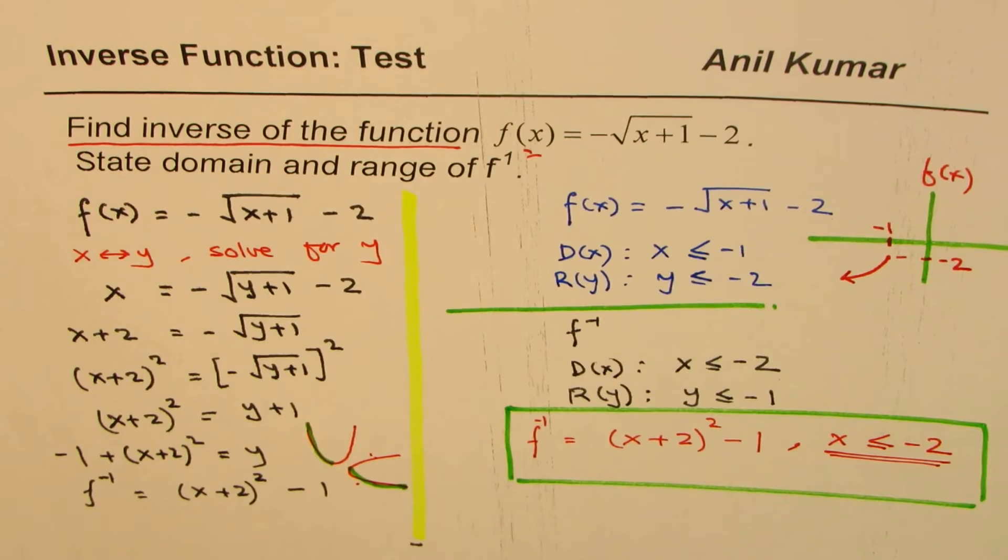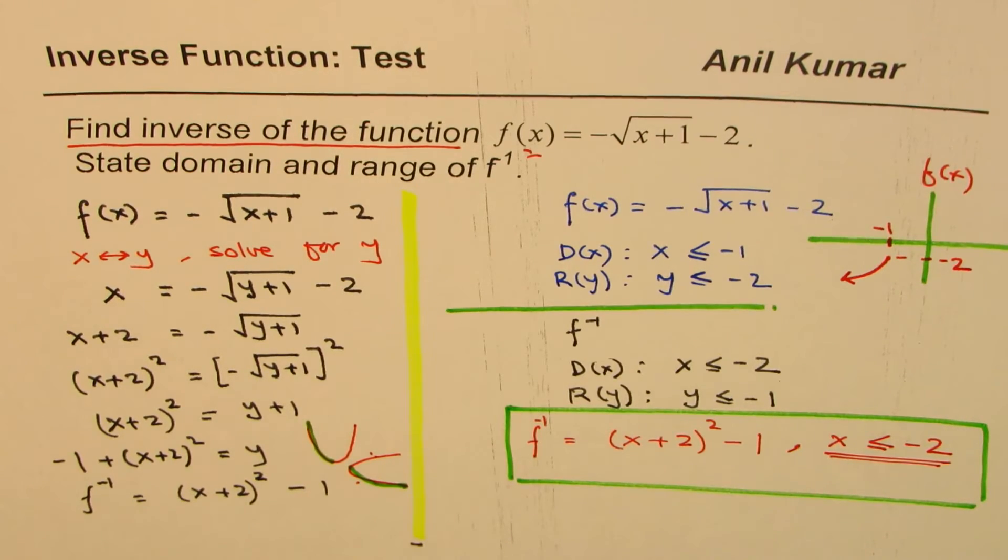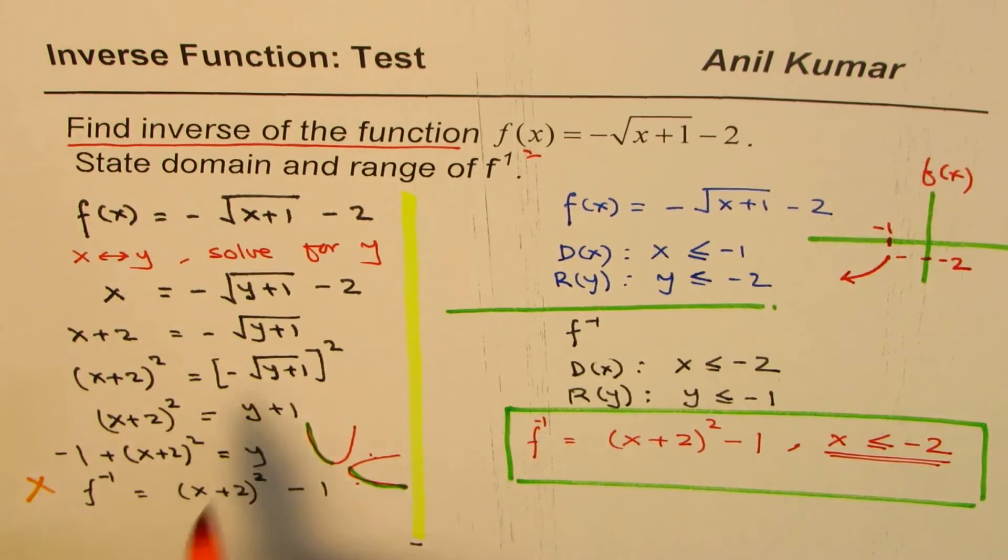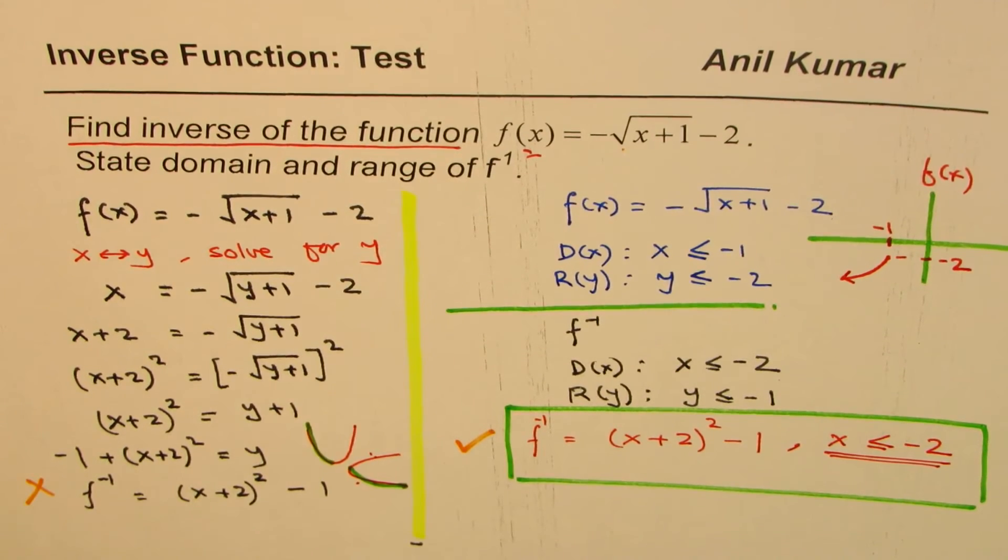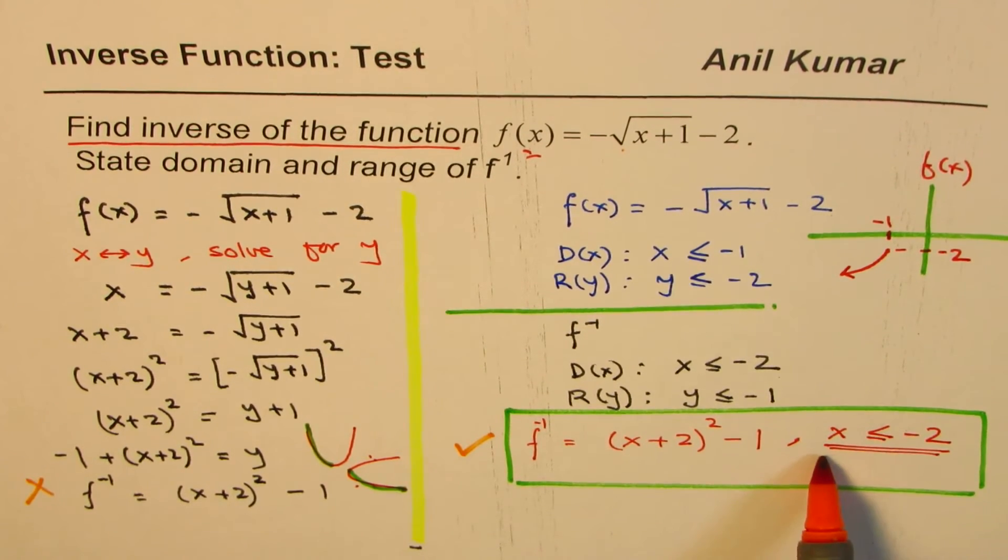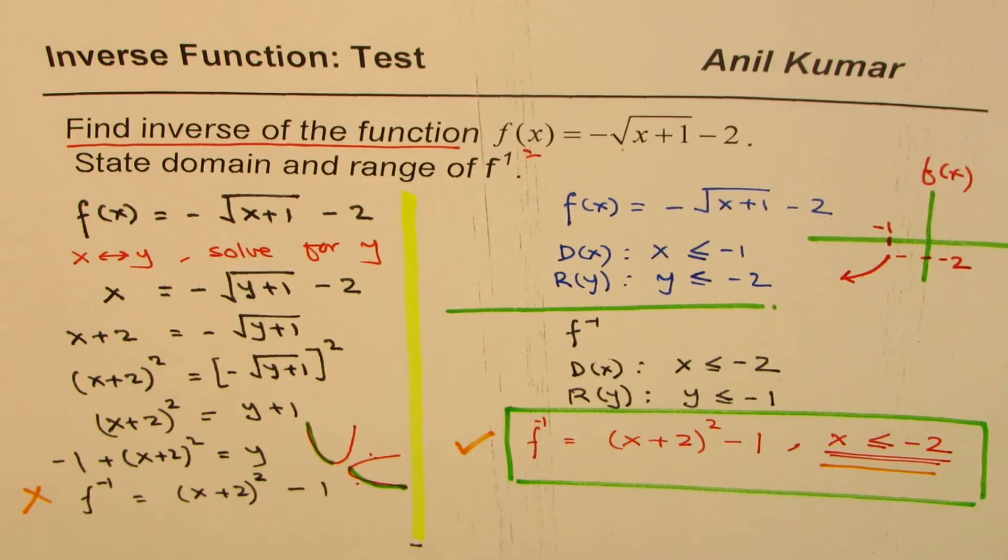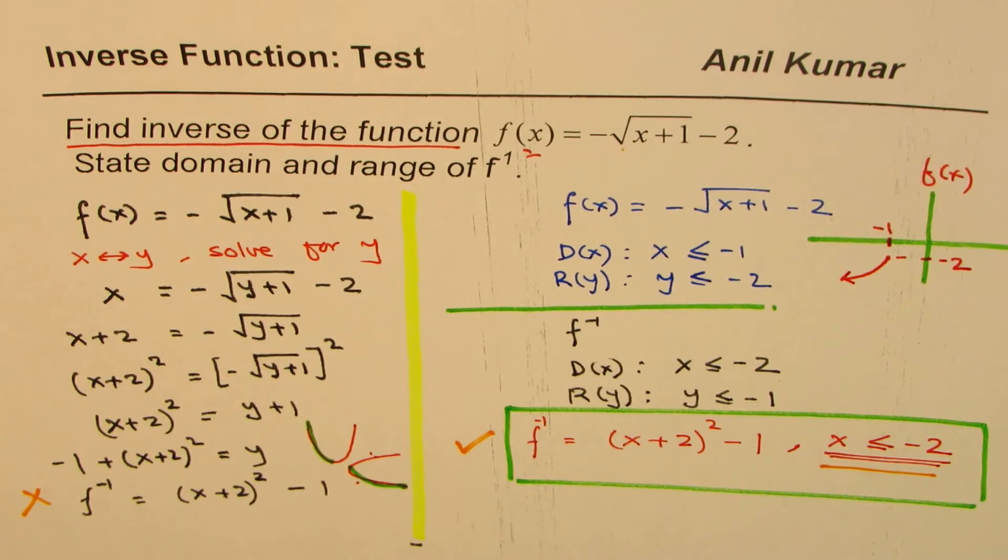If you write that, it is going to be incorrect. So you lose a lot of marks. This is not the inverse of that function. That is the inverse of this function. You have to include this restriction on the domain to get the right answer. I hope this concept is absolutely clear.